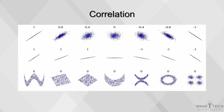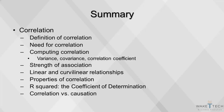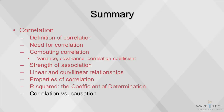Here's a look at some additional measures of correlation using scatter charts. This concludes our video on correlation. Today we discussed the definition of correlation, the need for correlation, details on computing correlation including variance, covariance, and the correlation coefficient, strength of association, linear and curvilinear relationships, properties of correlation, r-squared the coefficient of determination, and correlation versus causation.